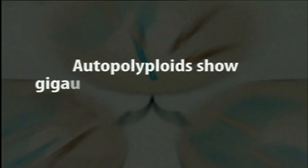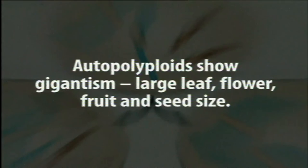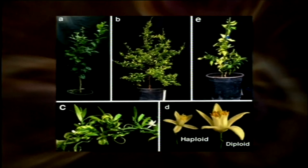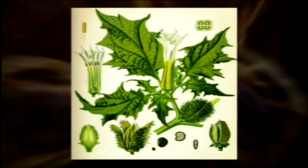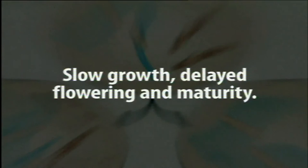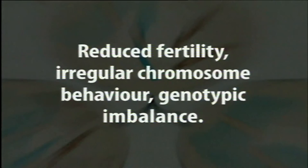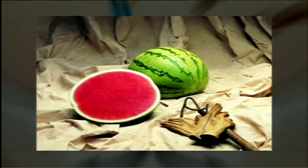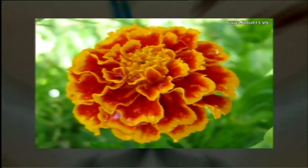Regarding morphological features and applications of autopolyploids: autopolyploids generally show gigantism, meaning increased size of different plant parts like leaves, flowers, fruits, and seeds. They also show larger cell size and larger pollen grains compared to diploids. Autopolyploids are characterized by slower growth and hence show delayed flowering and delayed maturity. They have reduced fertility due to irregular chromosomal behavior and genotypic imbalance. Autotetraploids have been produced in several fruit crops, vegetables, ornamentals, and forage crops.